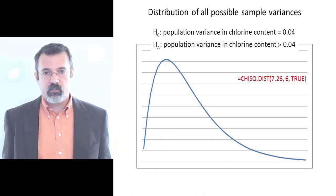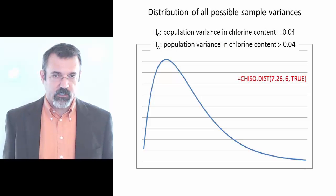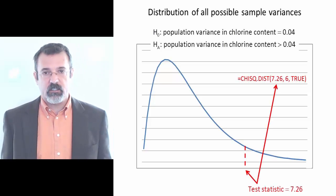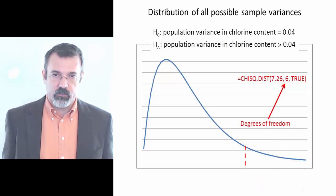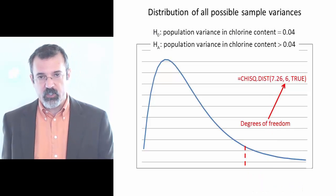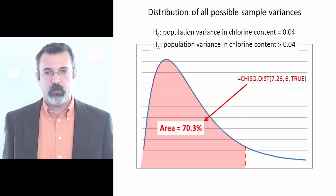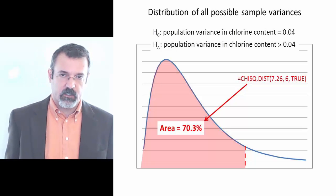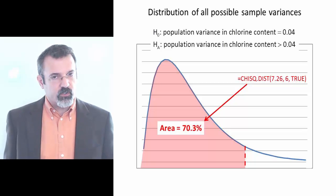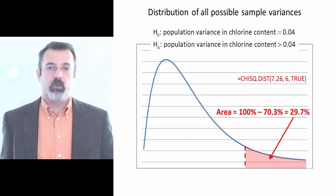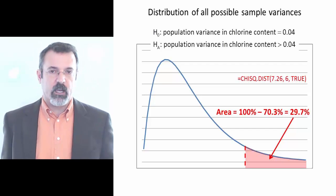To find the area on the chi-square distribution, we use the CHISQ.DIST function in Excel. The function takes three arguments: the first is the test statistic (in this case, 7.26); the second is the degrees of freedom, which is the number of observations minus 1; and the third argument is TRUE. The function returns the area to the left of the test statistic, in this case 70.3%. For city A, we're concerned with the area to the right, which is 100% minus 70.3%, or 29.7%.